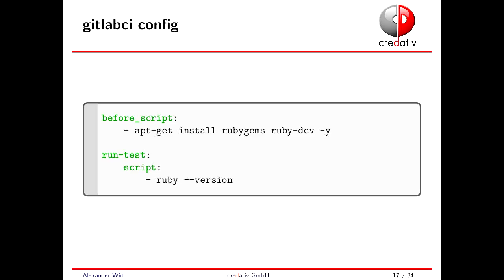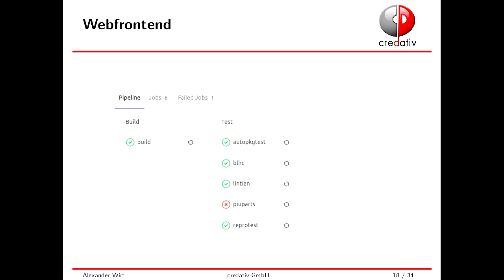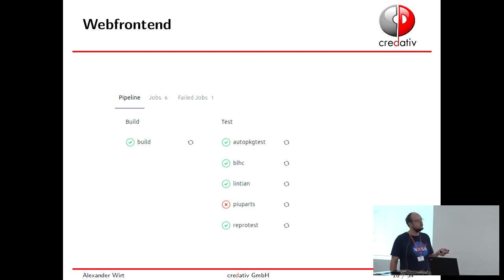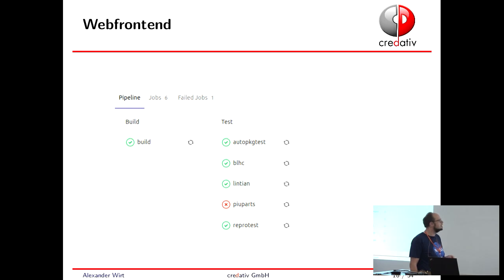GitLab CI configuration is pretty easy. You usually have a YAML file where you can run a script before you want to do something, and then you can do build steps — like building the package, building your source code, running Lintian, or running whatever you want — and you can also provide artifacts. If you do that, you have a web front end showing so-called pipelines where you can run your things. We have here a multi-stage pipeline which builds code and then runs several tests. You can get notifications out of it or create issues out of it if you want.